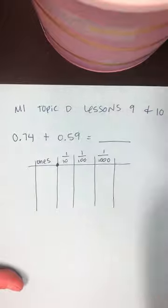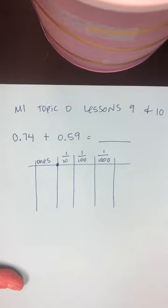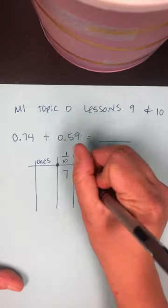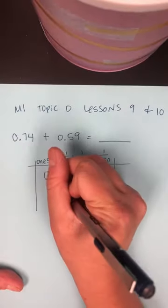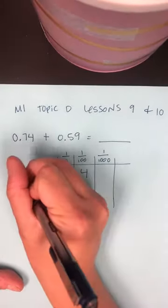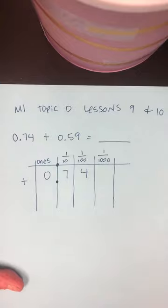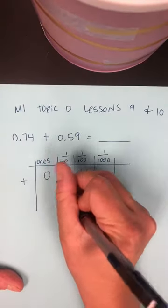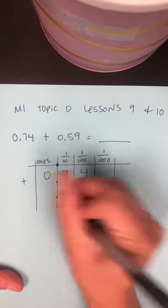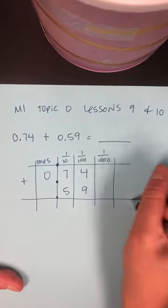So first I have my 0.74. I'm just going to write the digits this time instead of drawing the discs to save us some time. So, seven tenths and four hundredths. That is 74 hundredths. And I'm adding that with 59 hundredths, which is five tenths and nine hundredths.